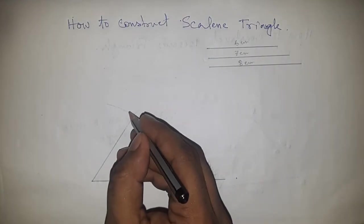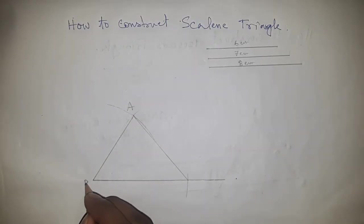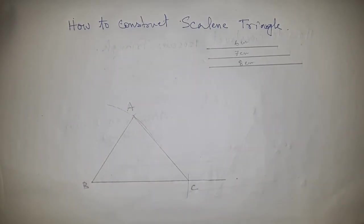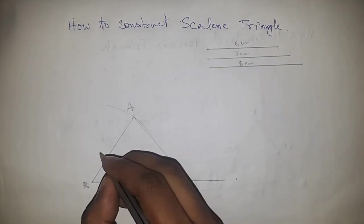So this is ABC, and the sides are: this is 8 centimeters, this is 6 centimeters, and this is 7 centimeters.